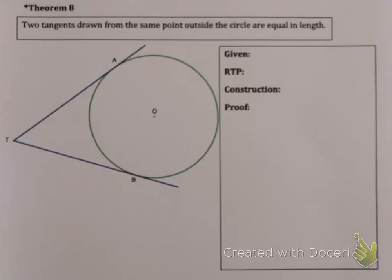Ok guys, we're moving on to Theorem 8. Theorem 8 is the only theorem that does not have a converse. Now Theorem 8 has an asterisk next to it, which means the proof of Theorem 8 is examinable.